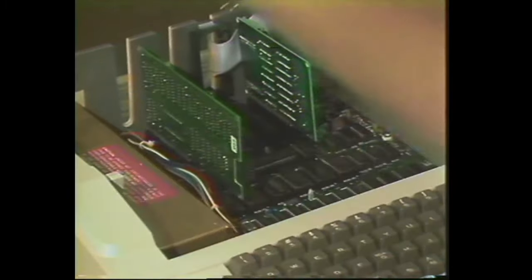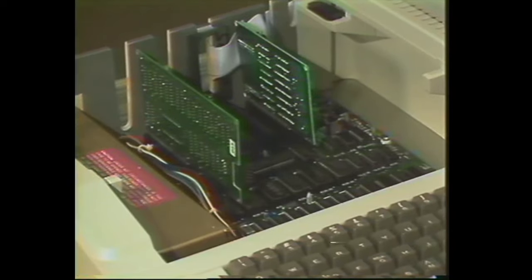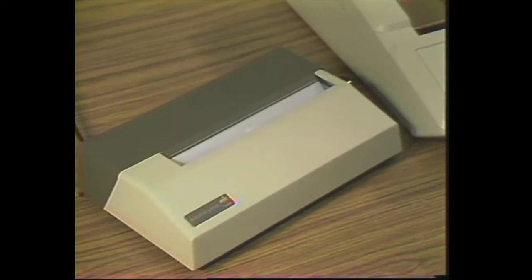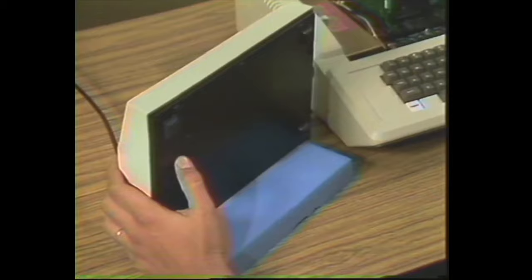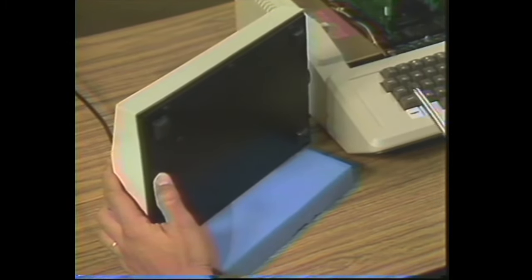Okay, now we want to put the silent type printer up on its back, and we'll use our foam pad to keep from marring the case of the printer. We need to remove the five screws that hold the cover to the base.